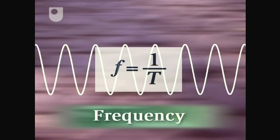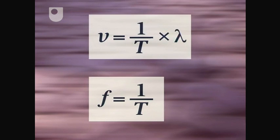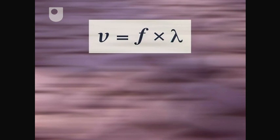So you now have two relationships that are true for all waves. Speed equals wavelength over period, and frequency equals one over period. Expressing the right hand side of the first equation as one over T times lambda, and substituting f for one over T, gives the fundamental equation of wave propagation: speed equals frequency times wavelength.